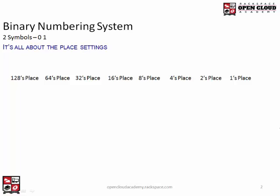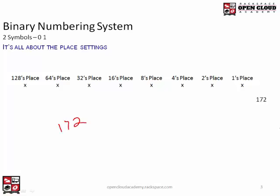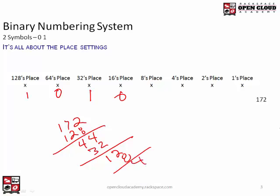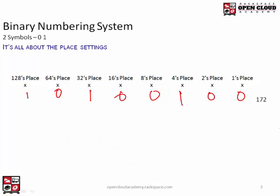Let's go over some more examples. Now we want to convert decimal to binary — we'll do 172. 128 is as close as you get without going over. 172 minus 128 is 44. 64 is too big, so let's take 32. 44 minus 32 is 12. Then 16 is too big, so we'll go with 8. That leaves 4. So 172 in binary would be 10101100.